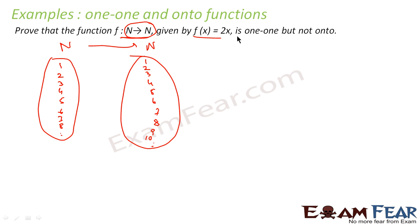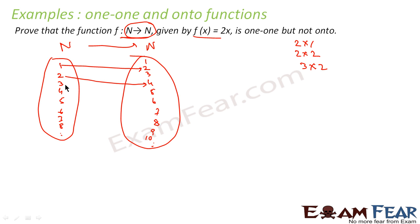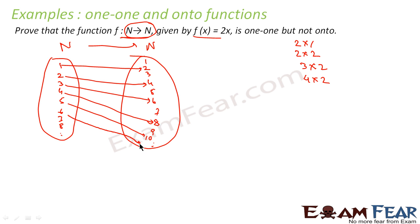The function is f(x) = 2x. If you give input 1, the output is 2×1 = 2. Input 2 gives output 2×2 = 4. Input 3 gives 2×3 = 6. Input 4 gives 2×4 = 8. Input 5 gives 10, input 6 gives 12, input 7 gives 14, input 8 gives 16. Notice there are elements like 11 and 13 on the output side with no mapping.